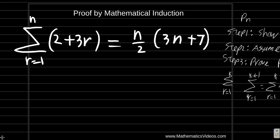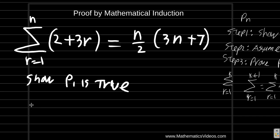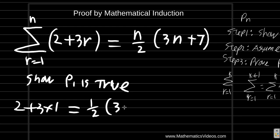You are going to show that P1 is true. Now remember, at P1, R is 1. So 2 plus 3 times 1 equals — N also happens to be 1 — 1 over 2 times 3 times 1 plus 7. So 2 plus 3 is 5, equals 3 times 1 is 3, 3 plus 7 is 10, 10 over 2 is 5. This shows it is true.